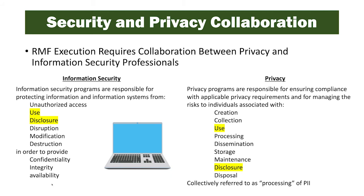When we look at security and privacy collaboration, we can see that they're so closely related that it makes sense to put them under the same umbrella of the RMF. RMF execution requires collaboration between privacy and information security professionals. Information security programs are responsible for protecting information and information systems from unauthorized access, use, disclosure, disruption, modification, and destruction, in order to provide confidentiality, integrity, and availability — the CIA triad.